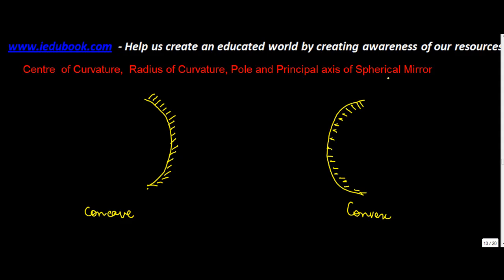When we write center of curvature, radius of curvature, pole and principal axis of a spherical mirror, this basically means that these mirrors are actually a part of a full circle. So in order to understand the above terms you first need to draw this full circle of which this particular mirror is a part. Now let's take them one by one.